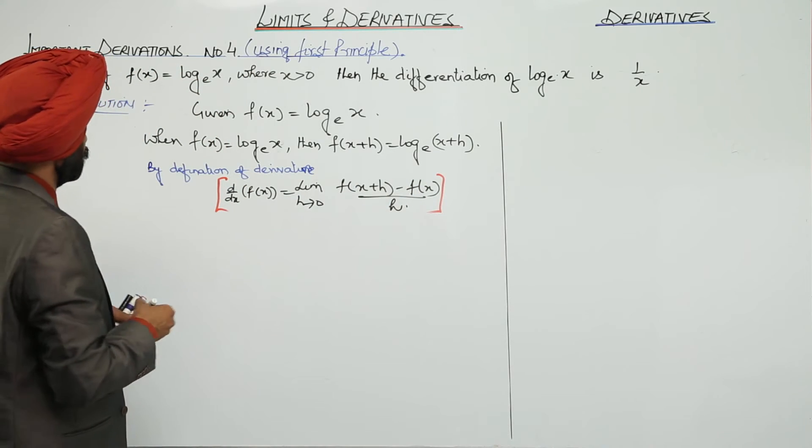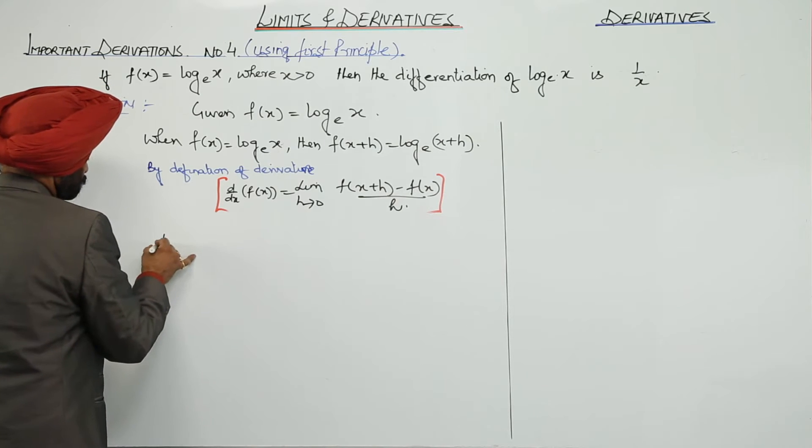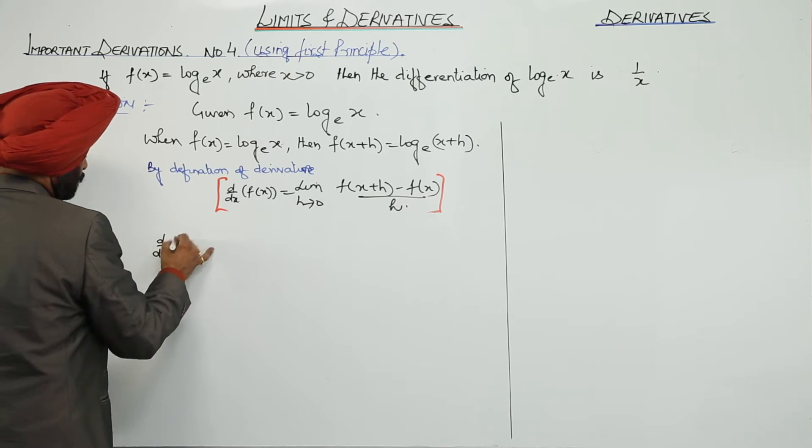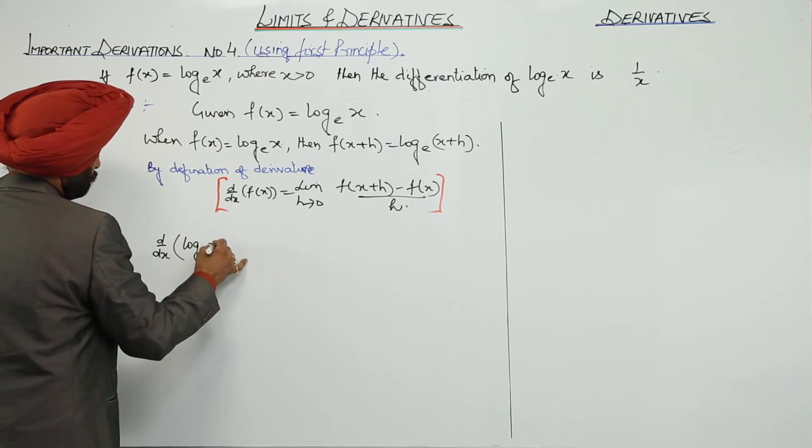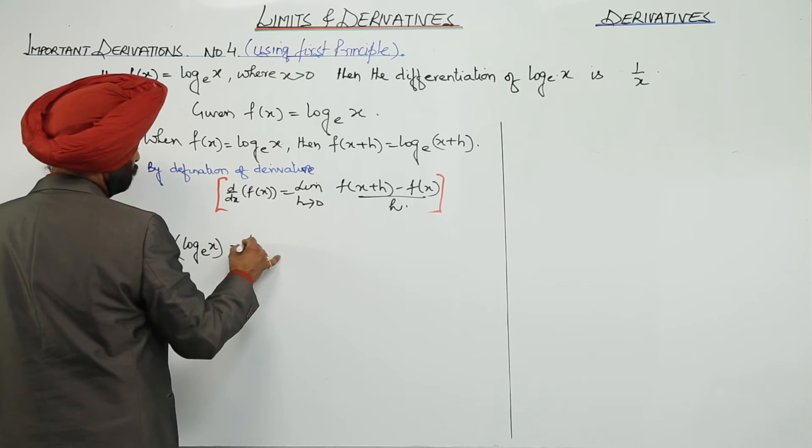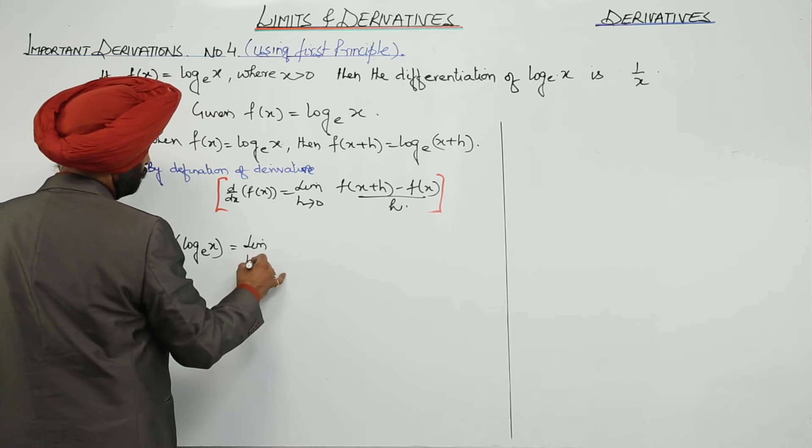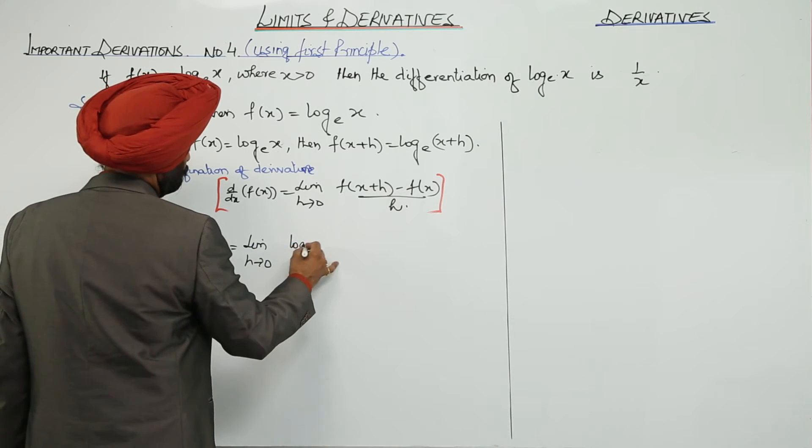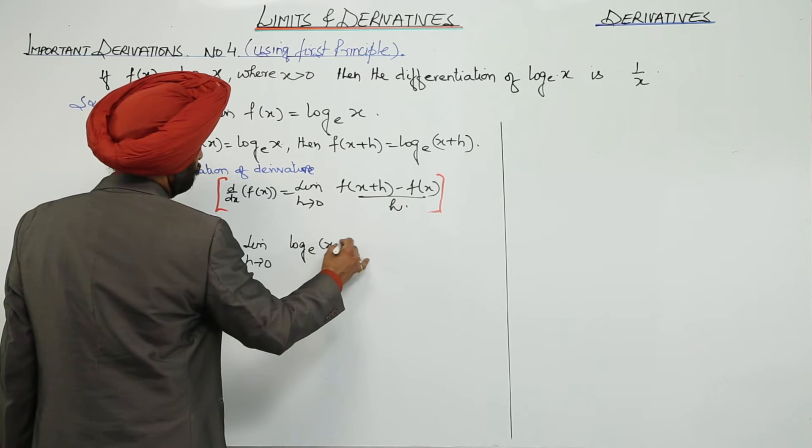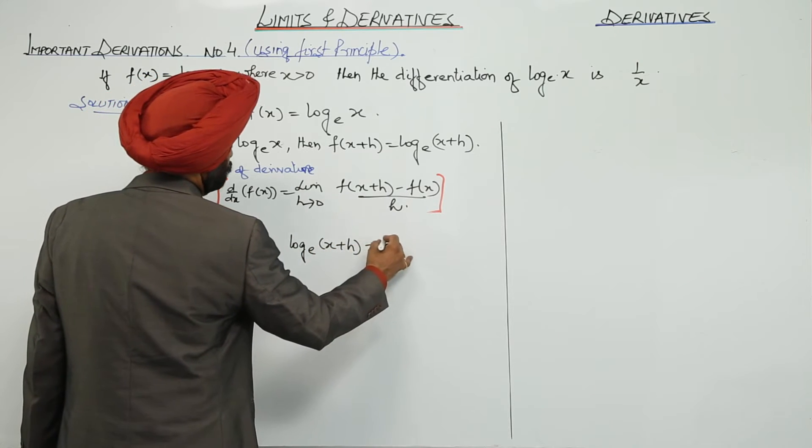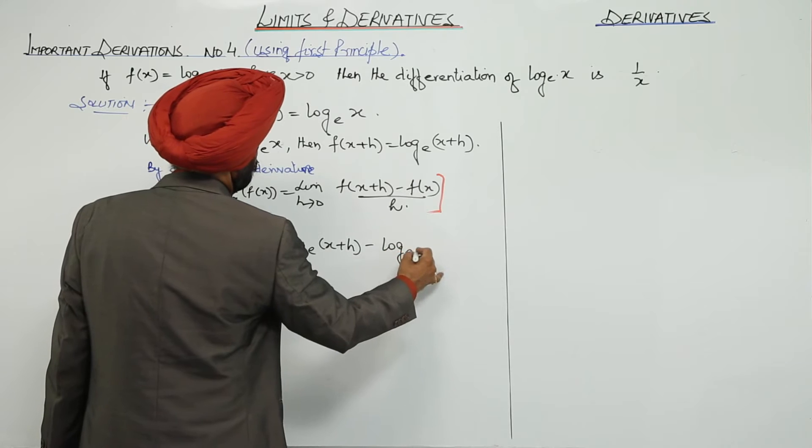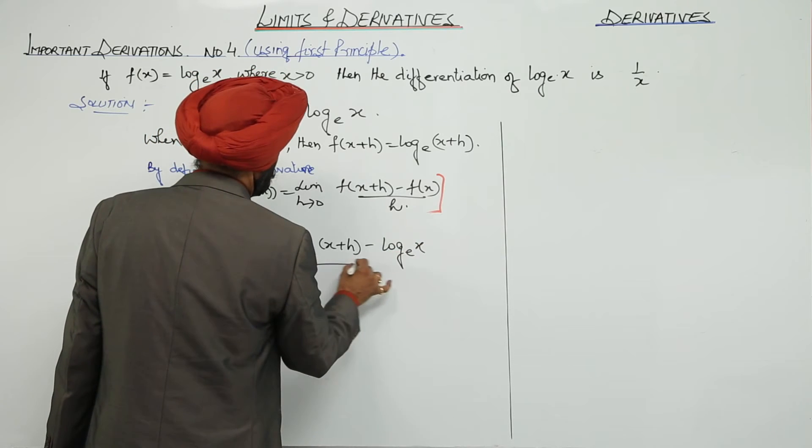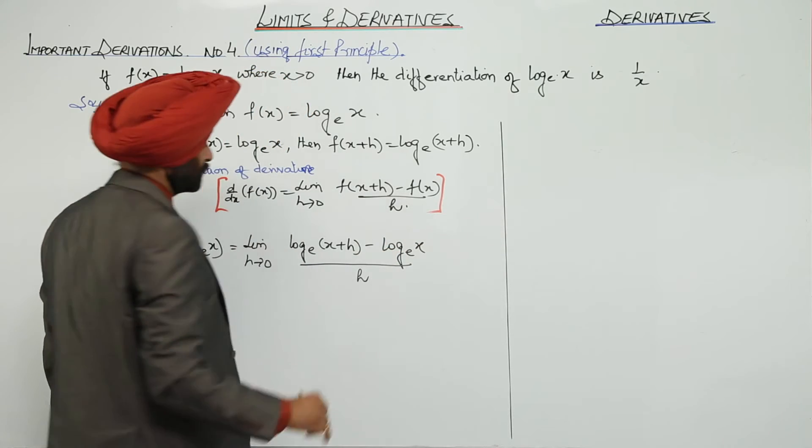Now, our question goes for now. d by dx of log x is equal to limit h approaches to 0, log e (x+h) minus log e x upon h.